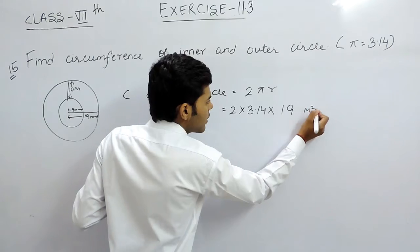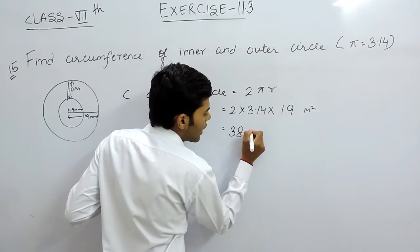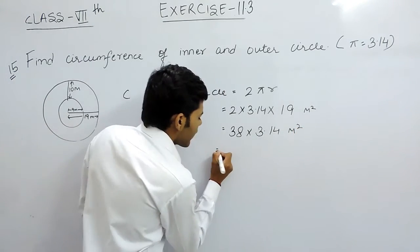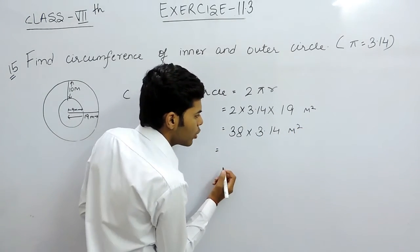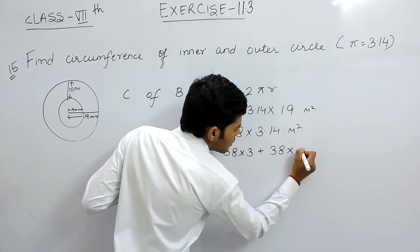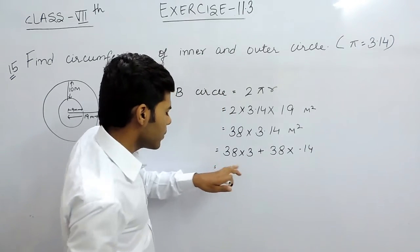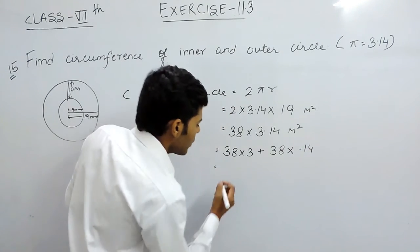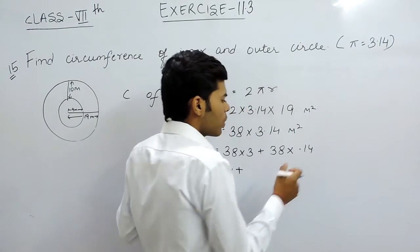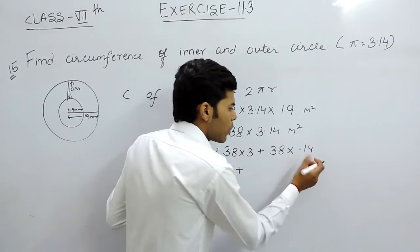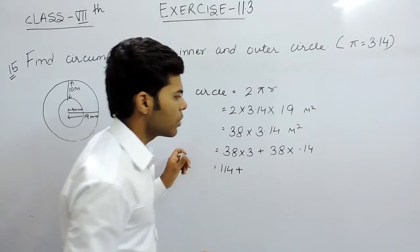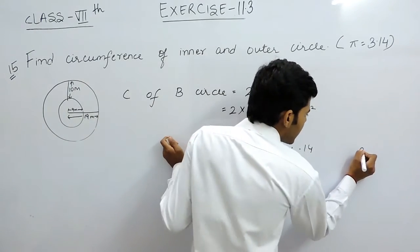Here it will be meters square, that will be 38 multiplied with 3.14 meters square. And now we can write this like 38 into 3 plus 38 into 0.14. So that will be 90 plus 24, that will be equals to 114 plus 38 into 0.14. Now how we can do this is, we can write this like 38 into 0.10 into 0.4 or we can simply direct multiplied.